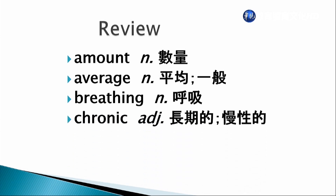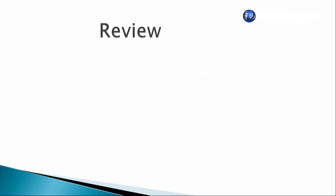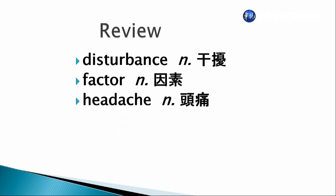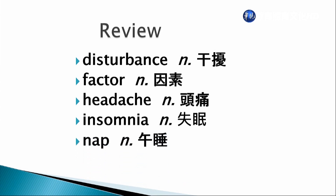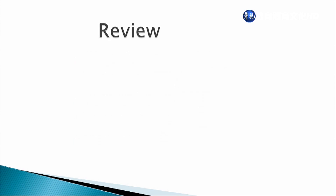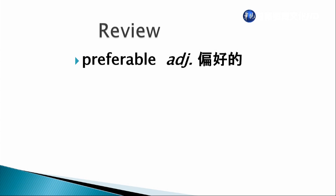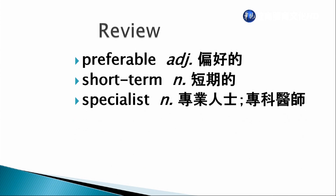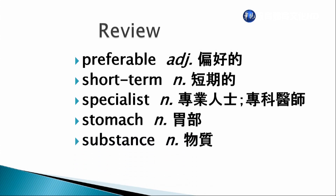接下來我們來做單字的總複習，大家可以跟我一起來念：Amount 數量，Average 平均，Breathing 呼吸，Chronic 長期的/慢性的，Disorder 失調，Disturbance 干擾，Factor 因素，Headache 頭痛，Insomnia 失眠，Nap 午睡，Preferable 偏好的，Short-term 短期的，Specialist 專業人士/專科醫師，Stomach 胃部，Substance 物質，Vary 差異。